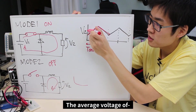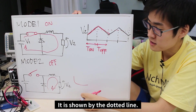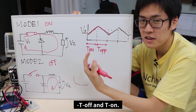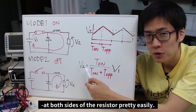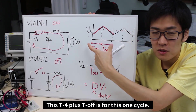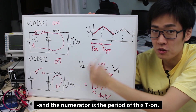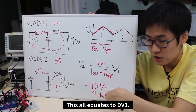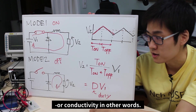The average voltage of V2 can be seen on this dotted line. Ultimately, the voltage is determined by a ratio between T off and T on. We can calculate the voltage at both sides of the resistor: T on plus T off is for just one cycle — that's the denominator — while the numerator is just the period of T on. This all equates to d times V1, where d is the duty ratio, which can also be thought of as conductivity.